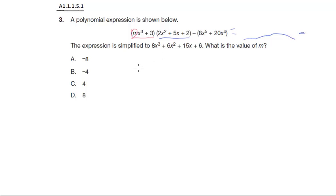This whole thing simplifies down to mx to the third plus three times 2x squared plus the rest of that equals some kind of 8x to the fifth because I'm going to be subtracting it from 8x to the fifth and making the whole thing disappear. And only x to the third times x squared is going to give you x to the fifth.